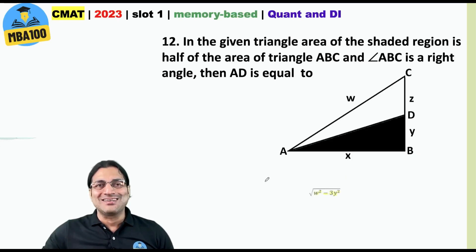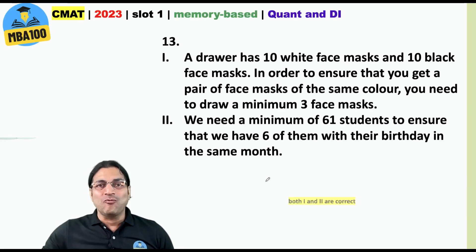What about this one? Square root of w square minus 3y square. What about this one? Both 1 and 2 are correct.